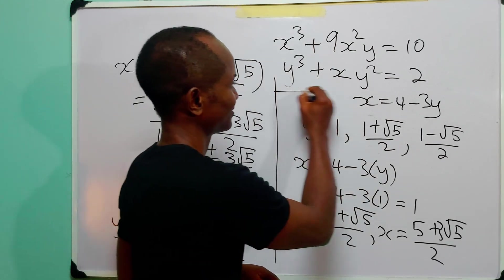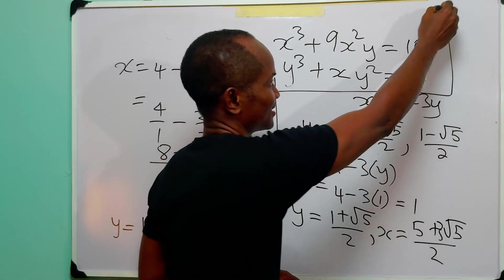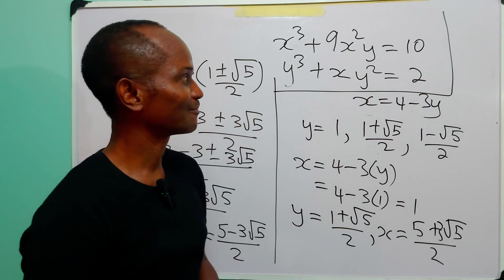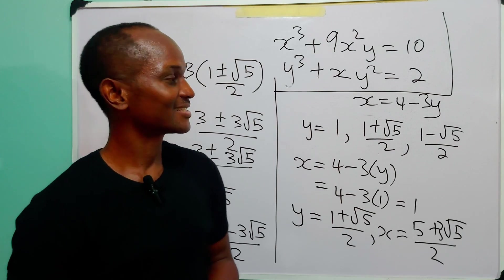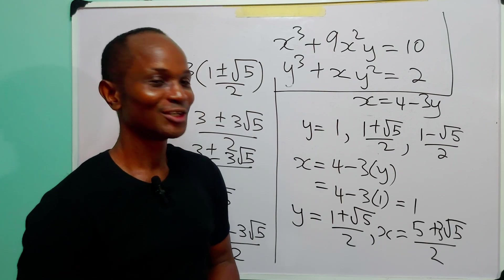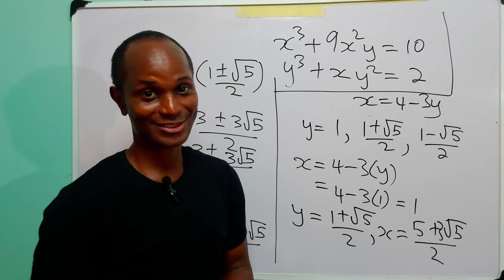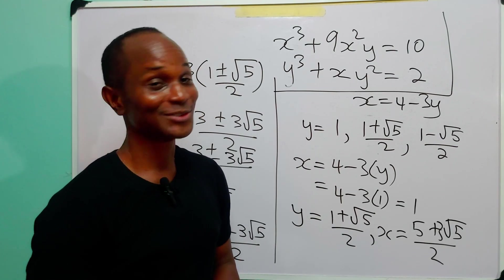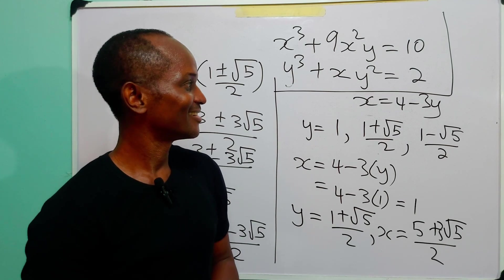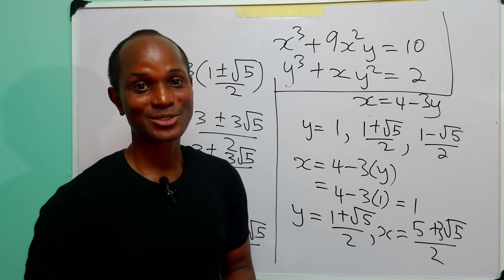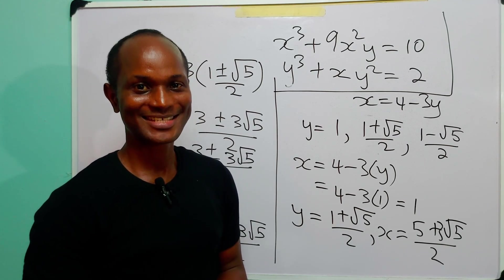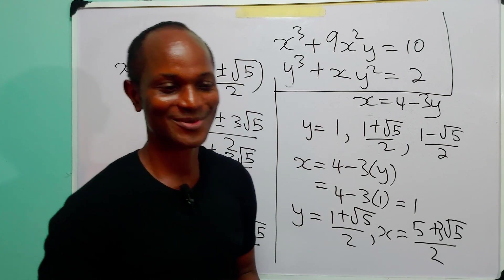So we have found three values for y and three corresponding values for x, solving the system of equations. It's been a rather long one and I hope you found it enjoyable and learned something. Remember to subscribe, like, and share. See you in the next one.